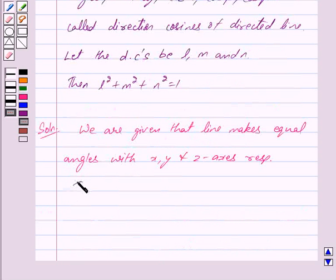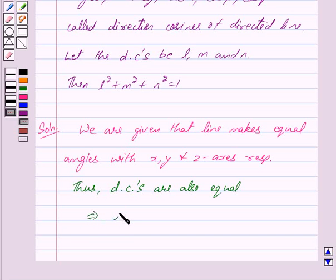Thus the direction cosines are also equal to one another. Now from key area we know that L, M and N are the direction cosines, so we get this implies L equals M equals N.